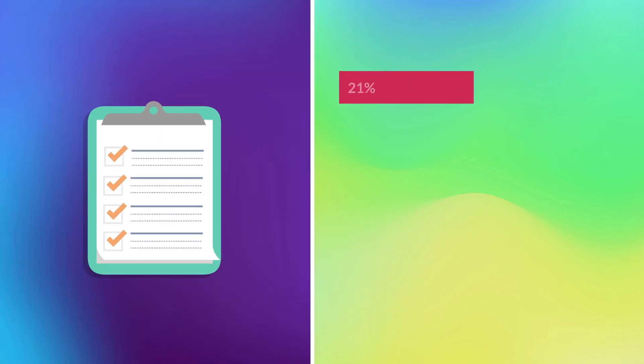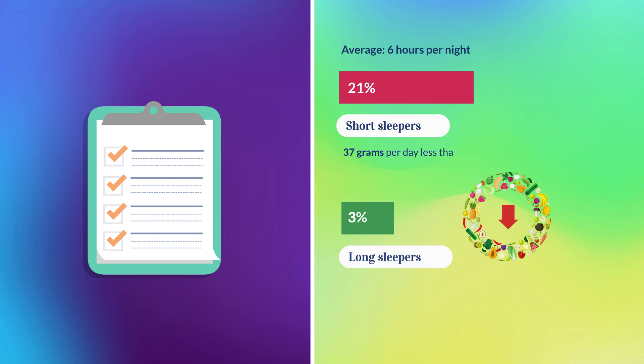Results show that 21% of participants were short sleepers, sleeping 6 hours per night on average. 3% were long sleepers. Short sleepers consumed, on average, 37 grams of fruits and vegetables per day less than normal sleepers.